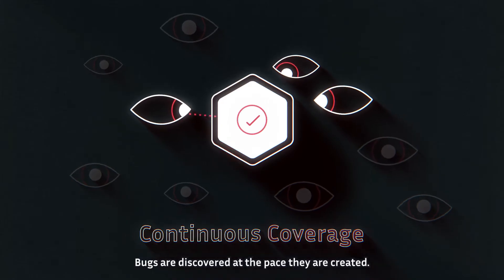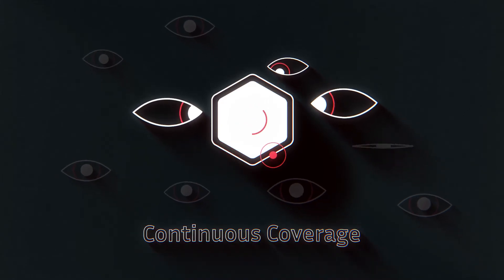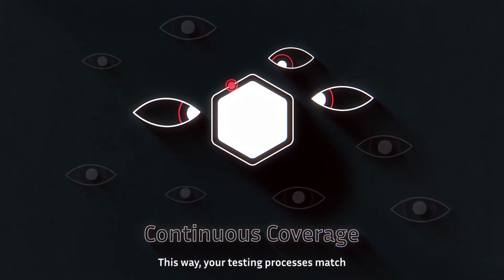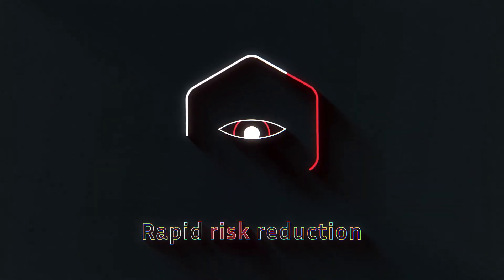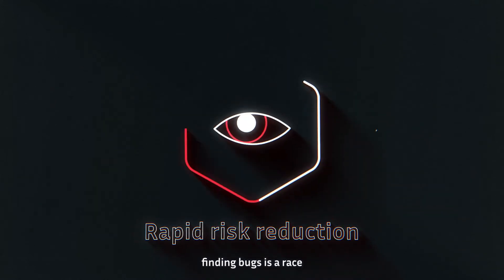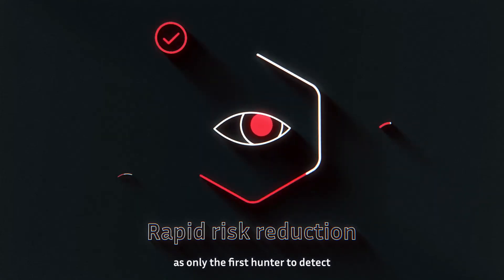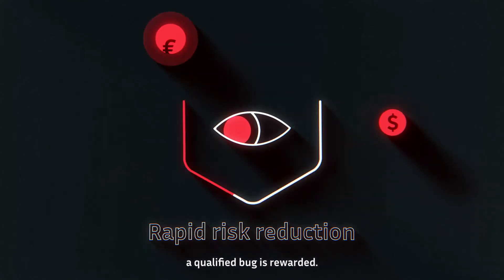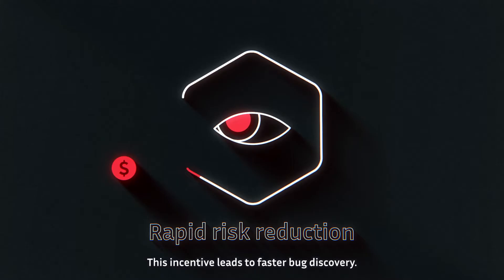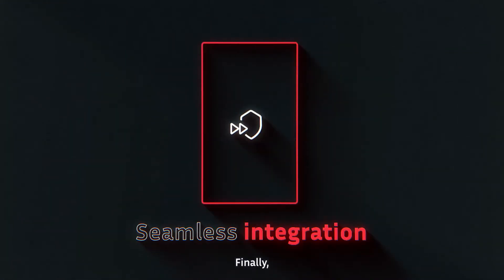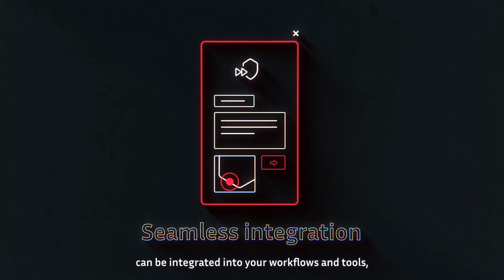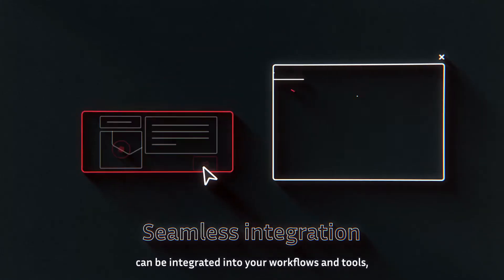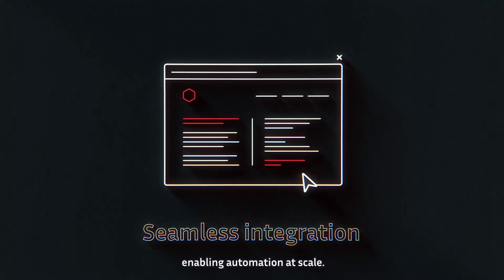Bugs are discovered at the pace they are created. This way, your testing processes match your actual agile delivery schedule. With Bug Bounty, finding bugs is a race, as only the first hunter to detect a qualified bug is rewarded. This incentive leads to faster bug discovery. Finally, the data generated through your programme can be integrated into your workflows and tools, enabling automation at scale.